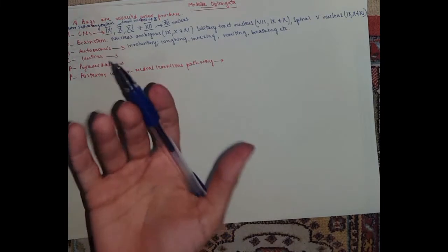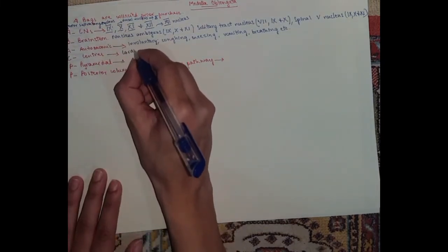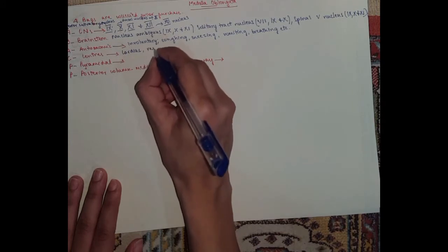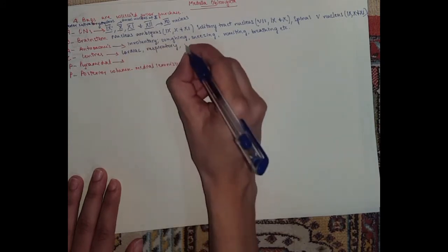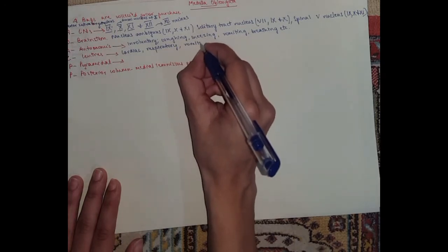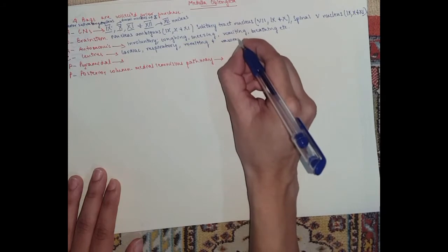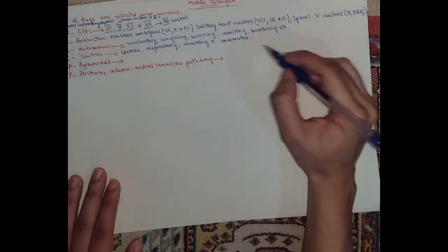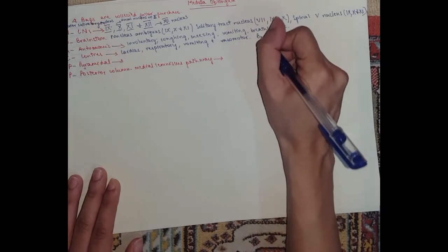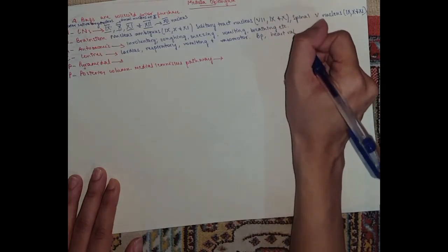The centers: the medulla has four centers. You've got the cardiac center, the respiratory center, vomiting, and vasomotor centers. That's why they regulate the breathing, blood pressure, heart rate, etc.